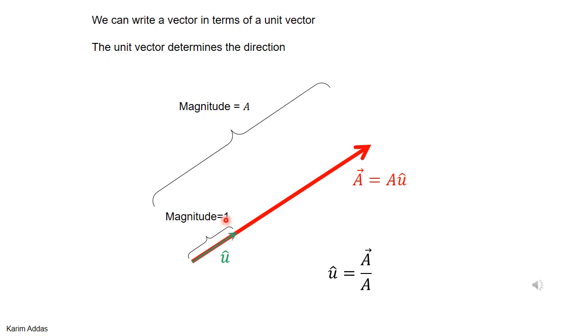It has no dimensions, no units. And then you can form any vector by multiplying this unit vector by a scalar quantity which has particular units and dimensions. To get the unit vector, you divide the vector by its magnitude.